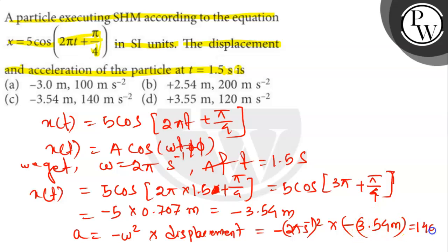Which is 140 meter per second square. So, this is the answer. Option number C is the right answer.